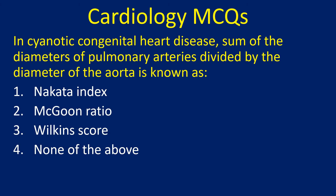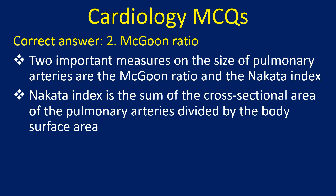In cyanotic congenital heart disease, the sum of the diameters of pulmonary arteries divided by the diameter of the aorta is known as: 1. Nakata index, 2. Magoon ratio, 3. Wilkins score, 4. None of the above. Correct answer: 2. Magoon ratio.